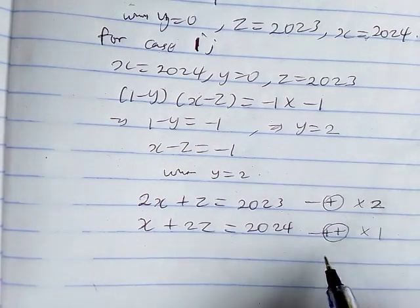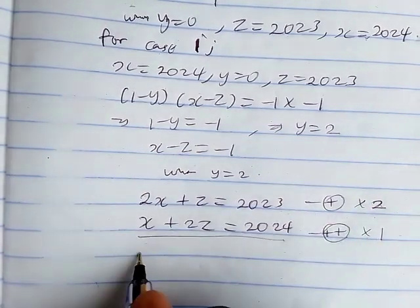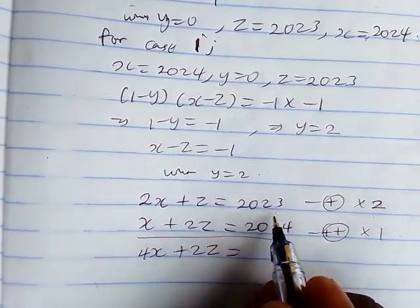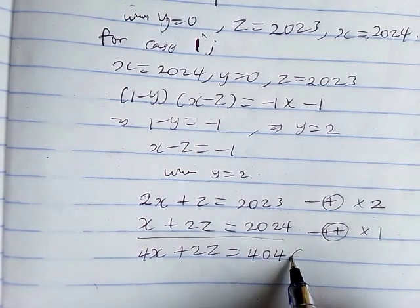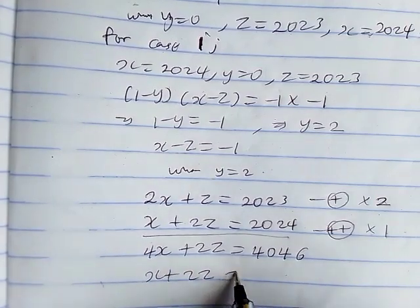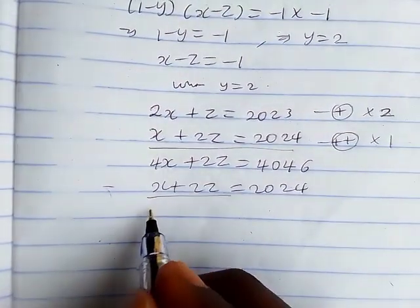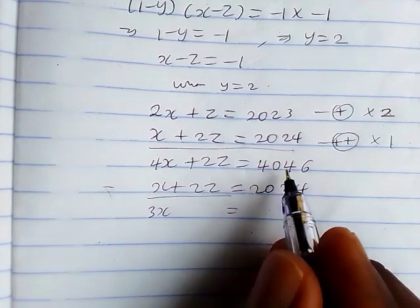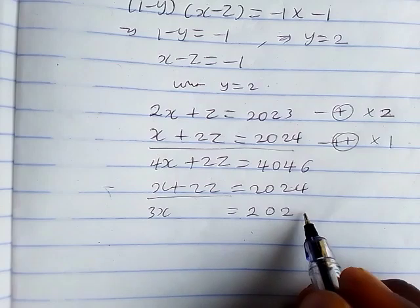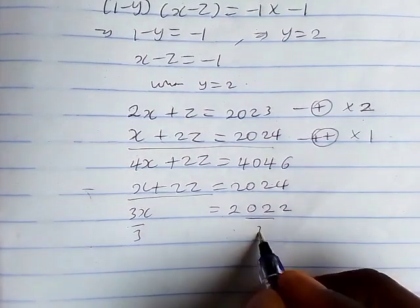We multiply the first equation by 2: 2 times 2x gives 4x, 2 times z gives 2z, and 2 times 2023 gives 4046. The second equation remains x plus 2z equals 2024. Subtracting the second from the first: 4x minus x equals 3x, and 4046 minus 2024 equals 2022. So 3x equals 2022.